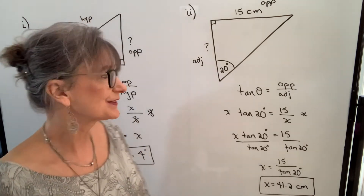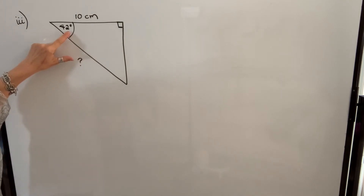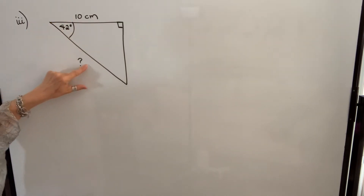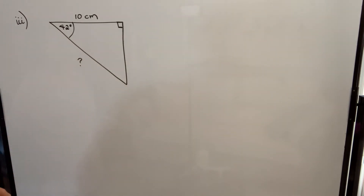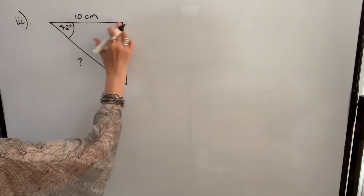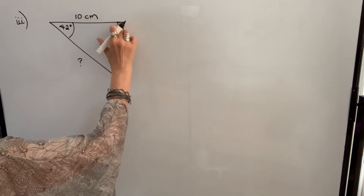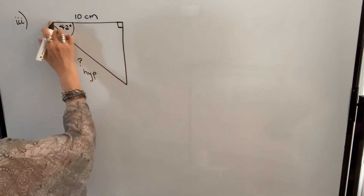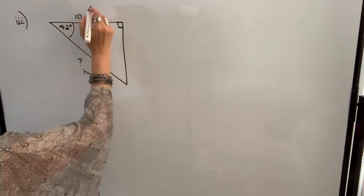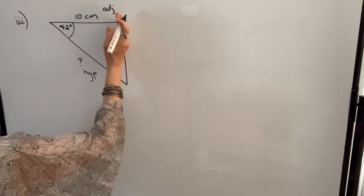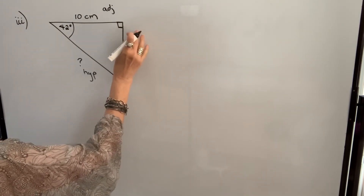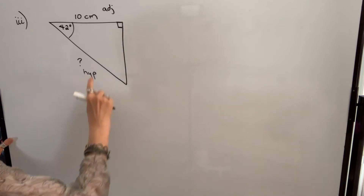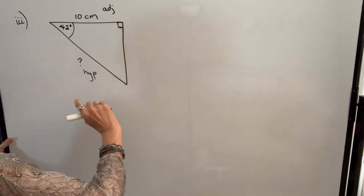Let's do some more examples. In our next example, this angle is 42 degrees, this side is 10 centimeters, and we want to find this side. First of all, define your sides in terms of this angle. This side is opposite the right angle, so this is the hypotenuse. This side is adjacent to the angle we're working with, so this is the adjacent side. This side would be opposite, but we don't know it and we don't want to know it, so we're going to leave it out. We're looking for the trig function that uses adjacent and hypotenuse, and that would be cosine.